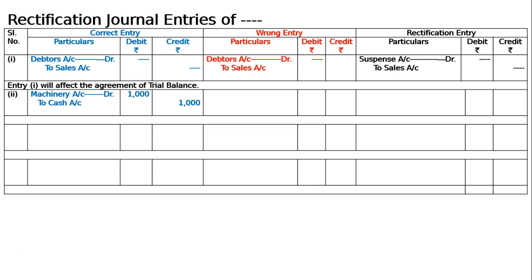It was debited to repairs account instead. This is repairs account debited to cash account, 1000/1000. Being: by mistake, cash paid for installation of machinery debited to repairs account. Now, machinery debited to repairs — this will be the rectification entry. Machinery account will come in the debit, hence write down machinery account.